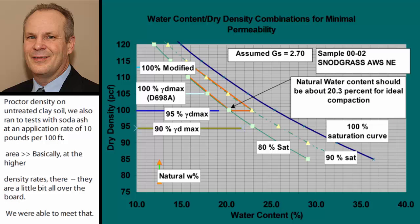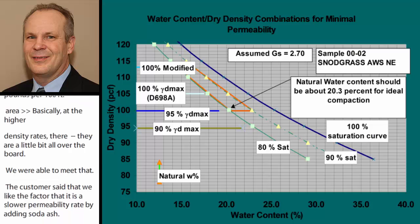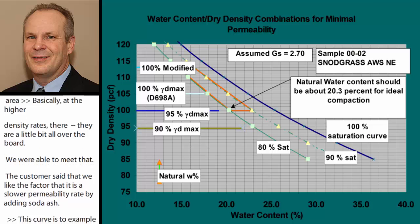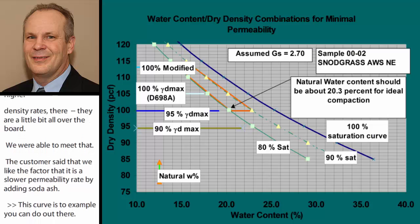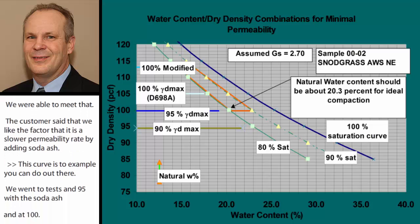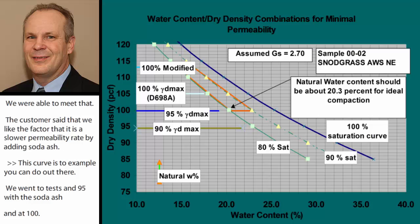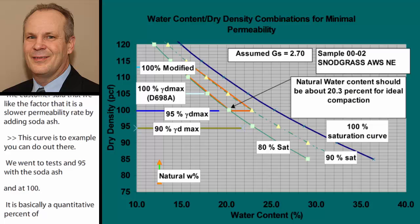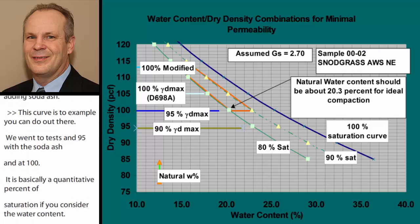This curve just demonstrates what you can do. We ran two tests at 95 percent and at 100 percent with the soda ash, and it's basically equivalent to 80 percent saturation when you consider the water content. You can develop a window of acceptability that you want to compact to — that's the method we went with.